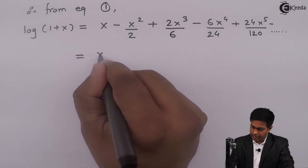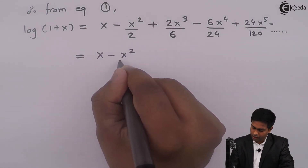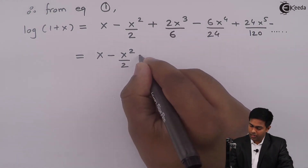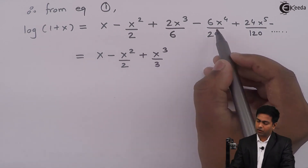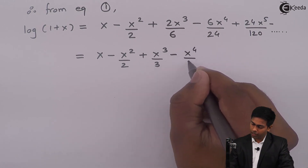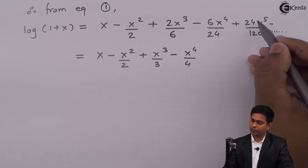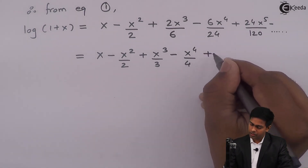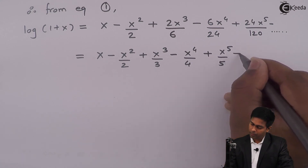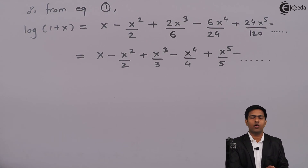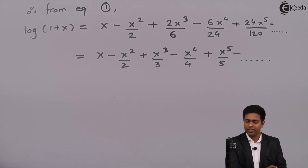Simplifying: we get x − x²/2 + 2x³/6 − 6x⁴/24 + 24x⁵/120 − ... which simplifies to x − x²/2 + x³/3 − x⁴/4 + x⁵/5 − ... So we have obtained the expansion of log(1+x) in terms of x using the Maclaurin series. Thank you.